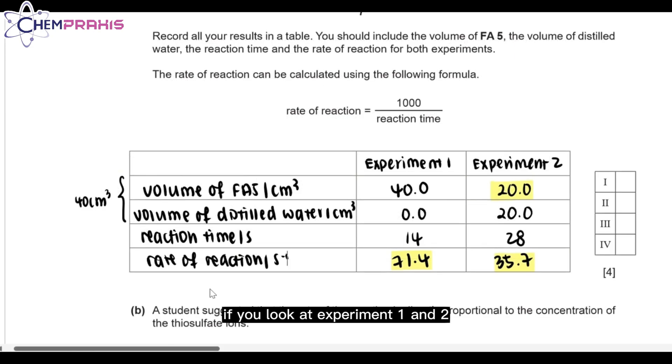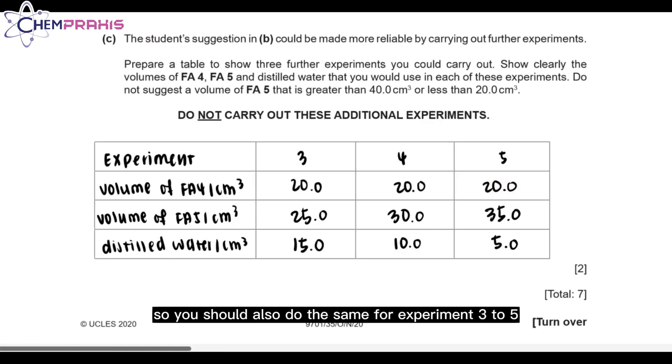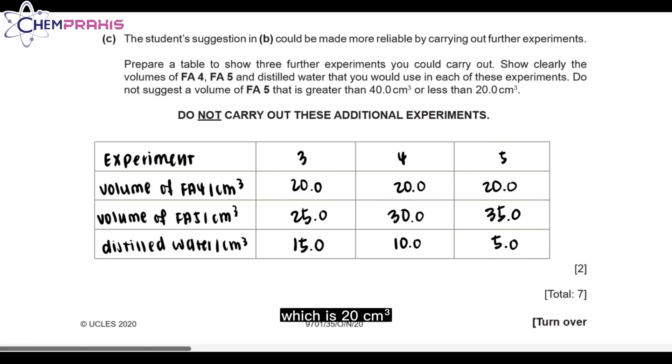If you look at experiment 1 and 2, the sum of the volume of FA5 and distilled water is always 40 cm³. So you should also do the same for experiments 3 to 5. The volume of FA4 will still remain constant, which is 20 cm³.